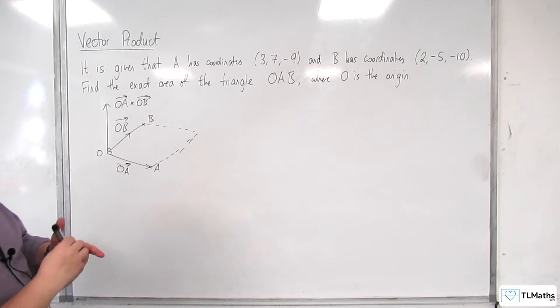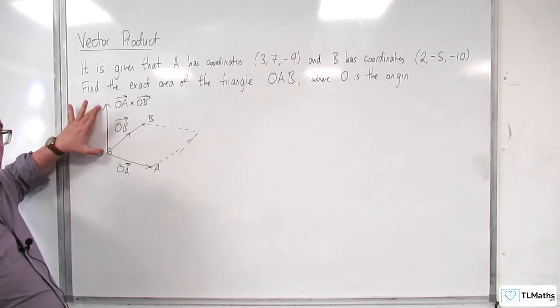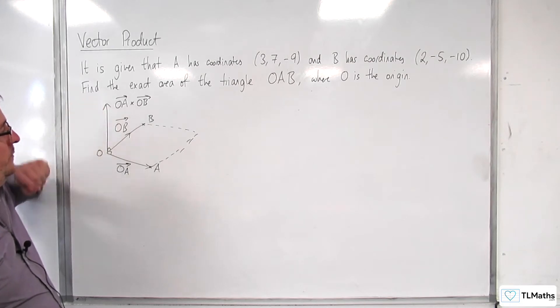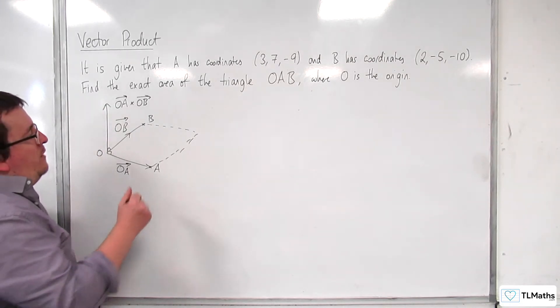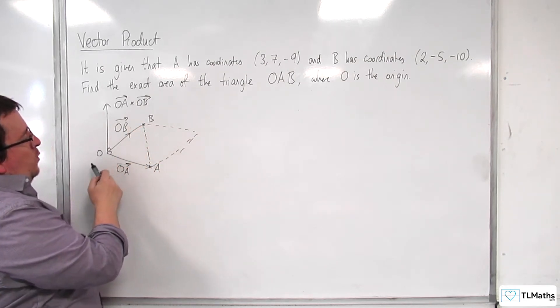So the area of that is the length of this vector. If we wanted to work out the area of the triangle OAB, then that's going to be half of the parallelogram.